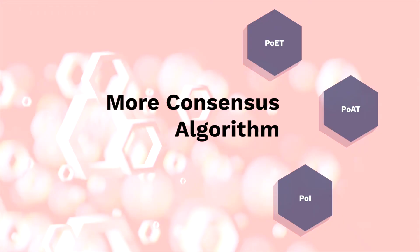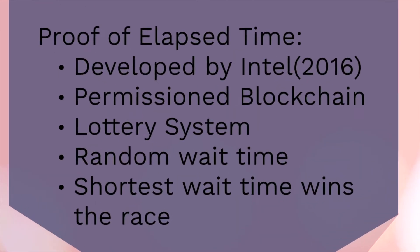We will be seeing some of the consensus mechanism algorithms today. Proof of Elapsed Time is one such consensus mechanism algorithm. Proof of Elapsed Time was developed by Intel in 2016 for permissioned blockchain. It utilizes blockchain on Hyperledger Sawtooth, which is a group of blockchain platforms. It works on the principle of a lottery system — a valid lottery system where a leader is elected.